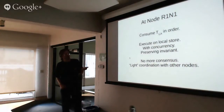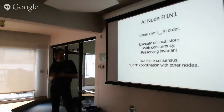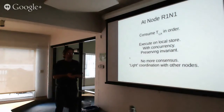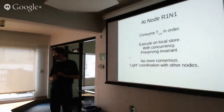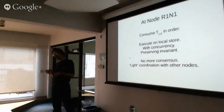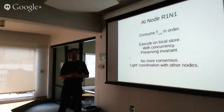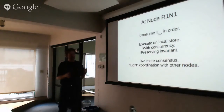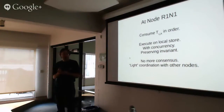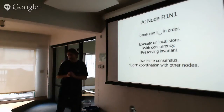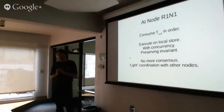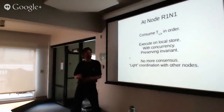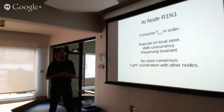So what does a node have to do? We've given it a nice ordering of transactions that everybody sees in the same order. It has to consume those transactions and execute them on some local storage system with concurrency — we can't just run T1 to completion, then T2 to completion, as that wastes time. We have to preserve the key invariant: the deterministic ordering of transactions, or more precisely, the invariant that the state of any node is as if the transactions had been executed in that deterministic order — even if we do some reordering for concurrency.